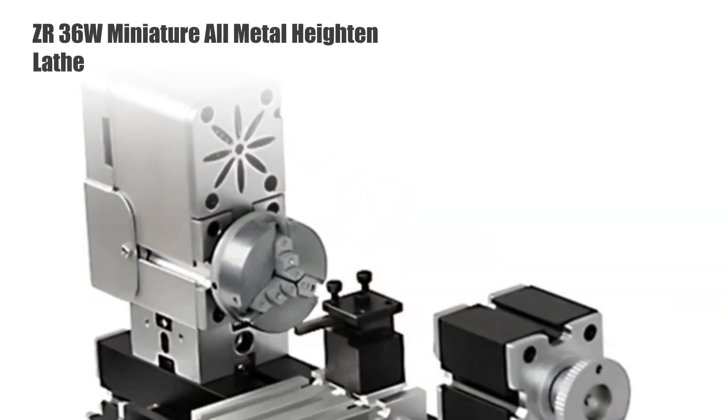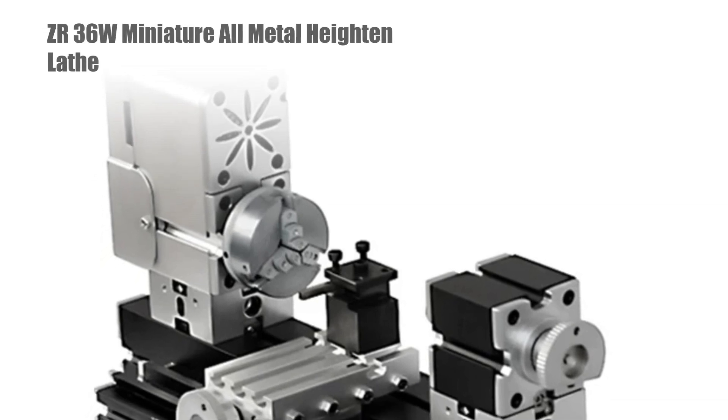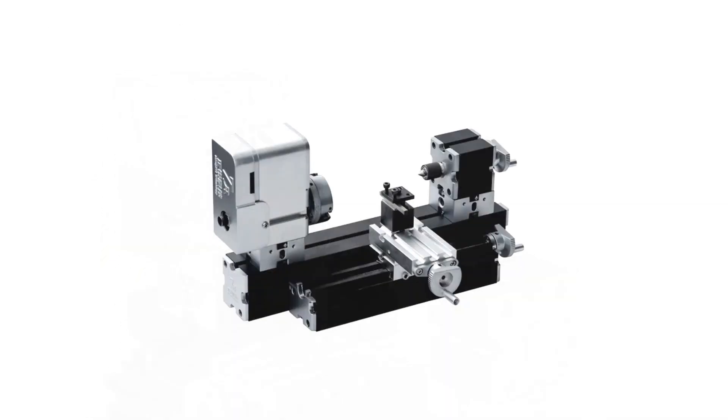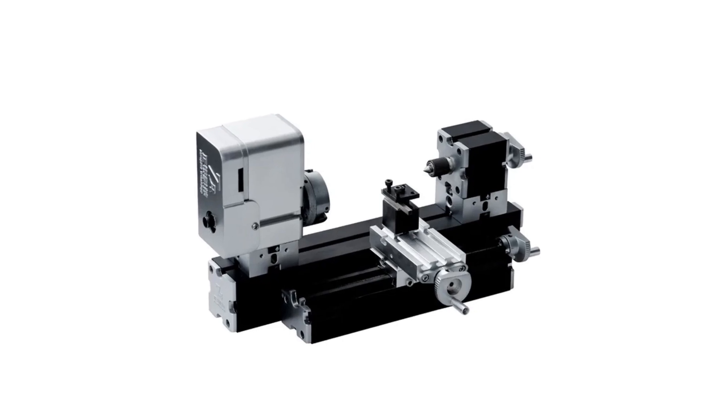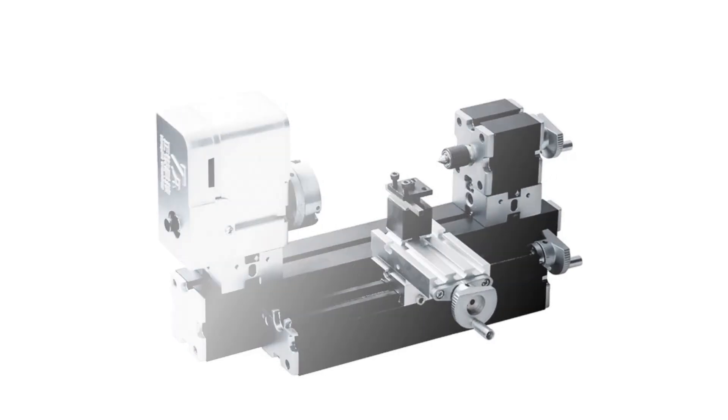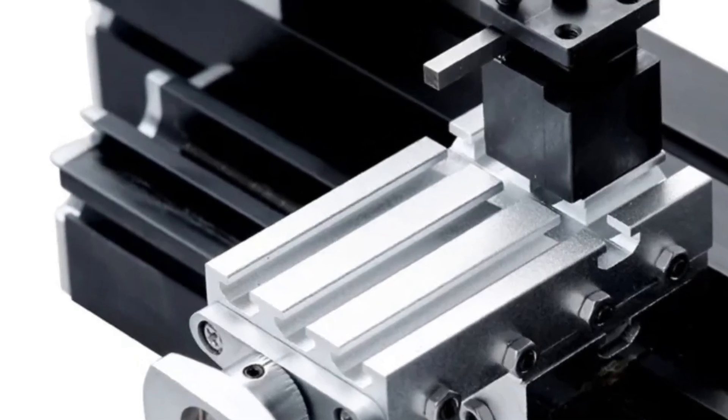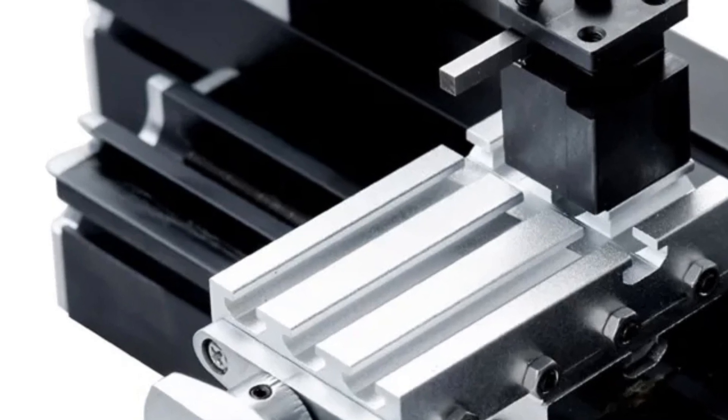Number 2, ZR36W Miniature All-Metal Heightened Lathe. Compact yet capable, the ZR36W Miniature Lathe is designed for processing soft metals, aluminum, wood, and plastic. With a 36W motor and a 50mm center, it offers sufficient power and stability for small-scale projects.